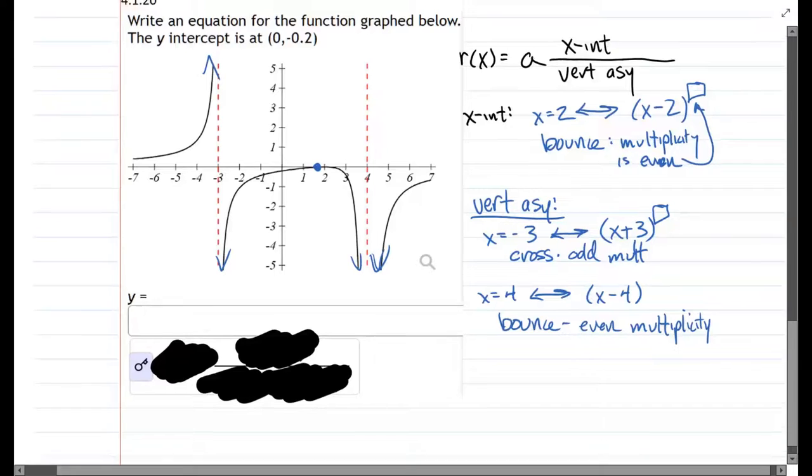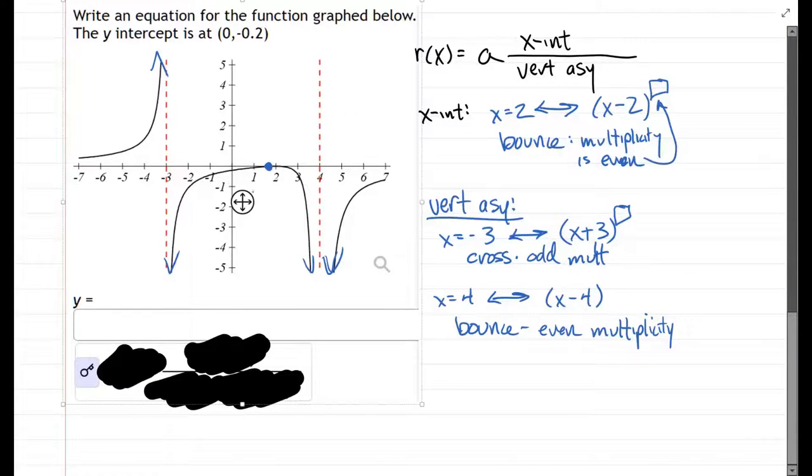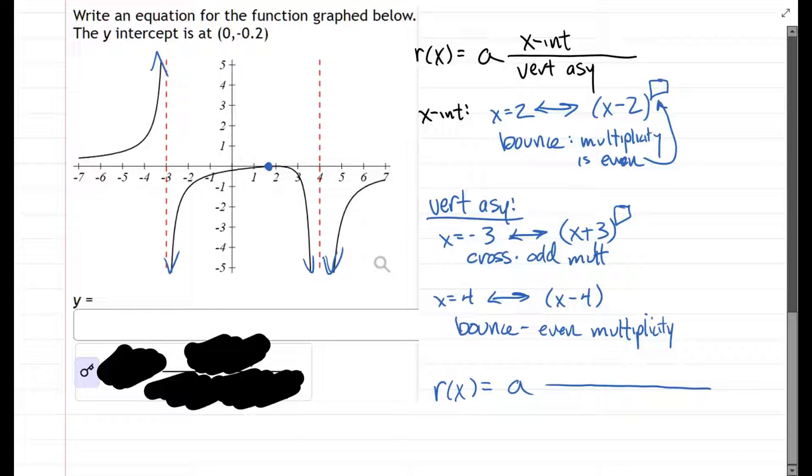So we're ready to construct our rational function. We should leave the letter a out front. This is a numerical factor we'll figure out. X-intercept, there's a single x-intercept x minus two. I'm going to default to the smallest even power right there.